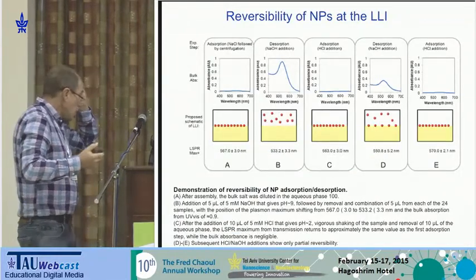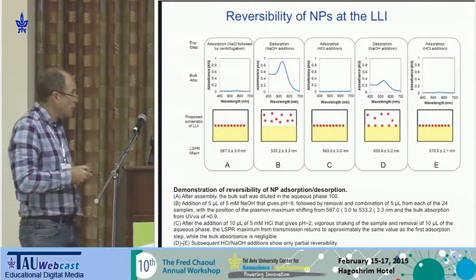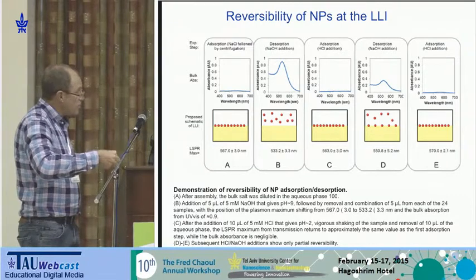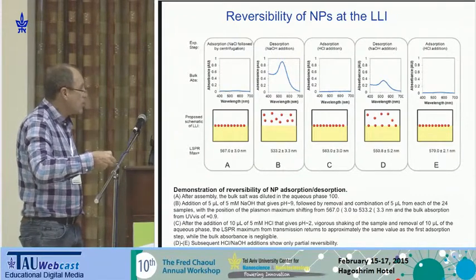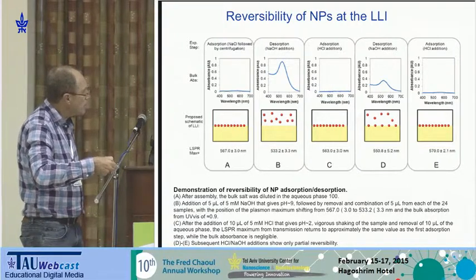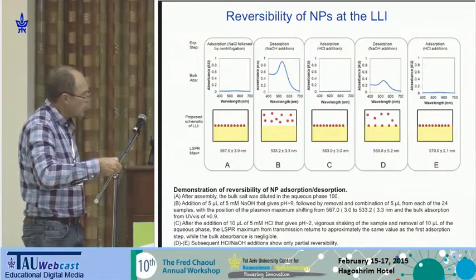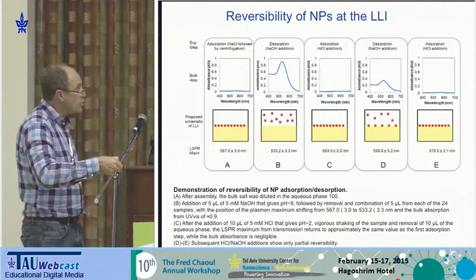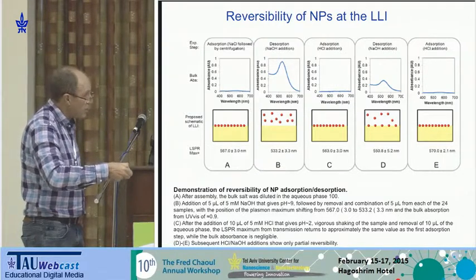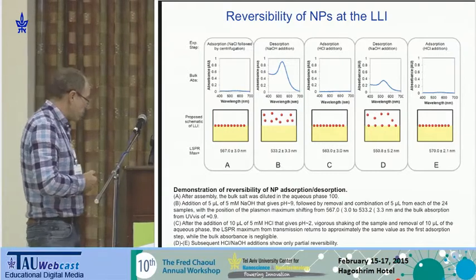By changing salt concentration or pH, you can bring particles to the surface and take them out. For very low pH, you have low charge of nanoparticles — they sit at the surface. You change pH of solution and take them out. Then you reduce pH again and your particles are back. You can repeat it. I cannot say this is ideal reversibility — it is partial reversibility — but this is what you can get.